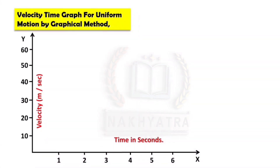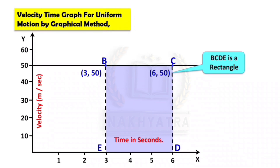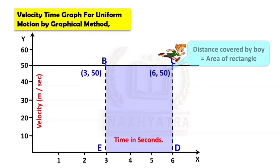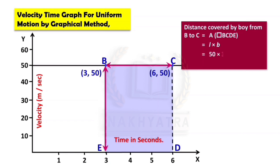Now see the velocity-time graph for uniform motion using the graphical method. Consider points B (3, 50) and C (6, 50). The region BCDE is a rectangle, and the distance covered by the boy equals the area of this rectangle. Area of rectangle BCDE = length × breadth = 50 × 3 = 150 meters. So the distance covered by the boy from B to C equals 150 meters.